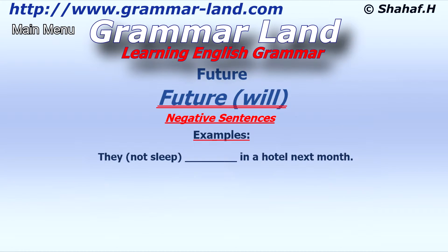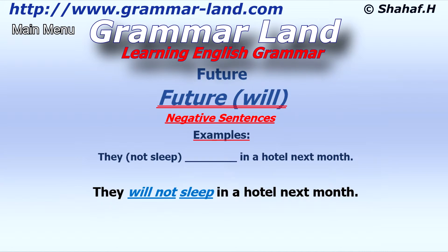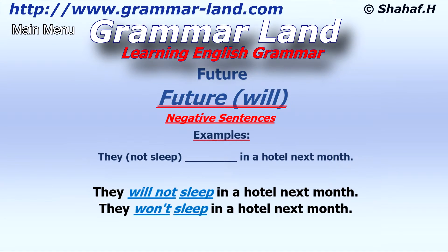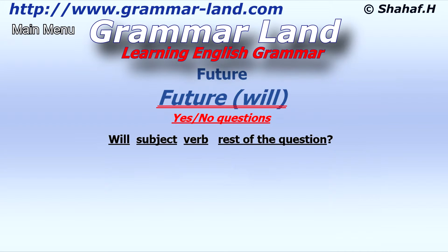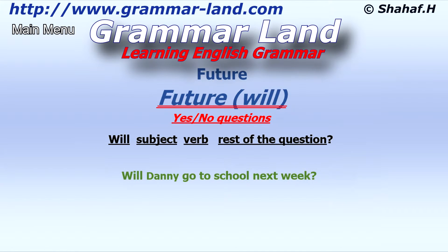Another example: 'They will not sleep in a hotel next month,' or 'They won't sleep in a hotel next month.' We use 'won't' or 'will not,' and the verb 'sleep' stays as it is. Yes/no questions: the question always starts with 'will,' then comes the subject, after the subject comes the verb in its basic form, and then the rest of the question. For example: 'Will Danny go to school next week?'